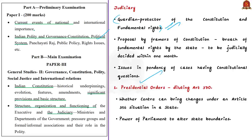The first example is the constitutional challenge to the Presidential Orders of August 5, 2019 — regarding the dilution of Article 370 of the Indian Constitution. This order effectively diluted Article 370 and bifurcated the state of Jammu and Kashmir into two Union Territories, now controlled by the central government. A fundamental question arises about the power given by the Constitution to the Center: whether the Center can bring changes in a state under an Article 356 situation.